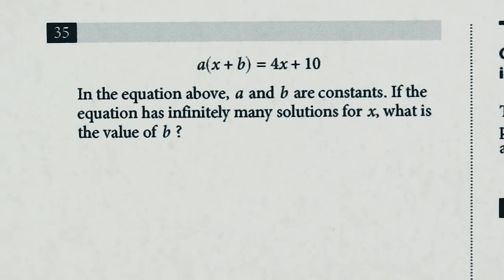You've got a times x plus b is equal to 4x plus 10. It says in the equation above a and b are constants. If the equation has infinitely many solutions for x what is the value of b? I left my answer as just 10 over a and didn't realize that I could solve for a as well.